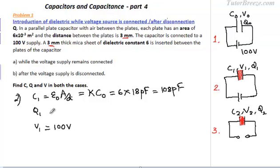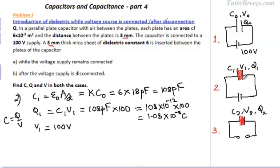Next we find the charge using the relation between C, Q, and V. Note that you can find Q using Q = CV, but you cannot find capacitance from this relation because capacitance depends on the geometry of the capacitor. So Q1 equals C1 times V1. After the dielectric is introduced while the supply remains connected, the capacitance increases by kappa to 108 picofarad, the voltage remains 100 volts, and the charge also increases by the dielectric constant.